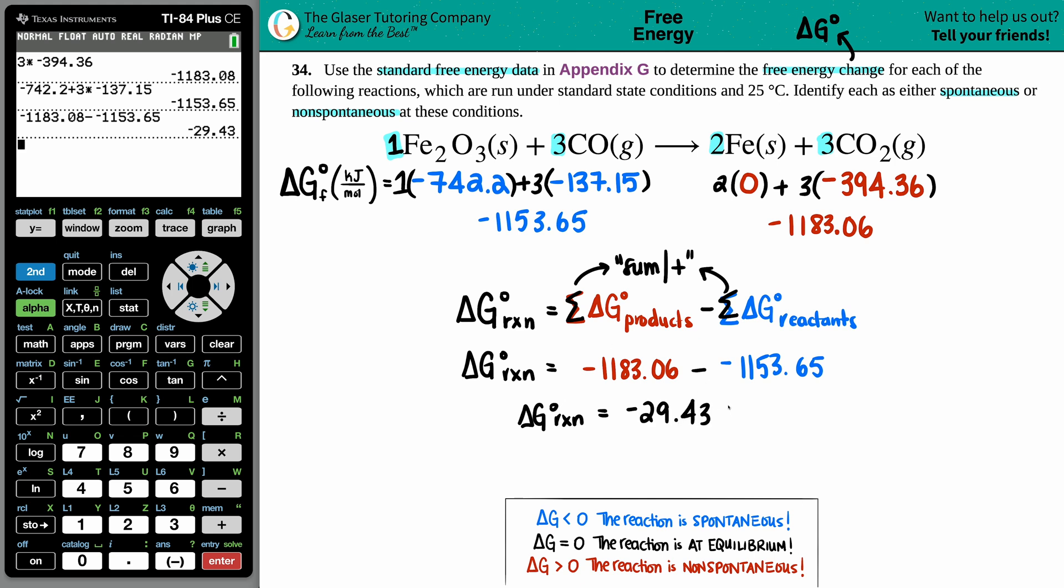The delta G value would be in kilojoules. Keep in mind that each delta G value is kilojoules per mole. When you're multiplying each one by your coefficient—the coefficient is secretly a mole value—you're getting rid of moles and you're left with kilojoules. We have the answer to the first part: the free energy would be negative 29.43 kilojoules.